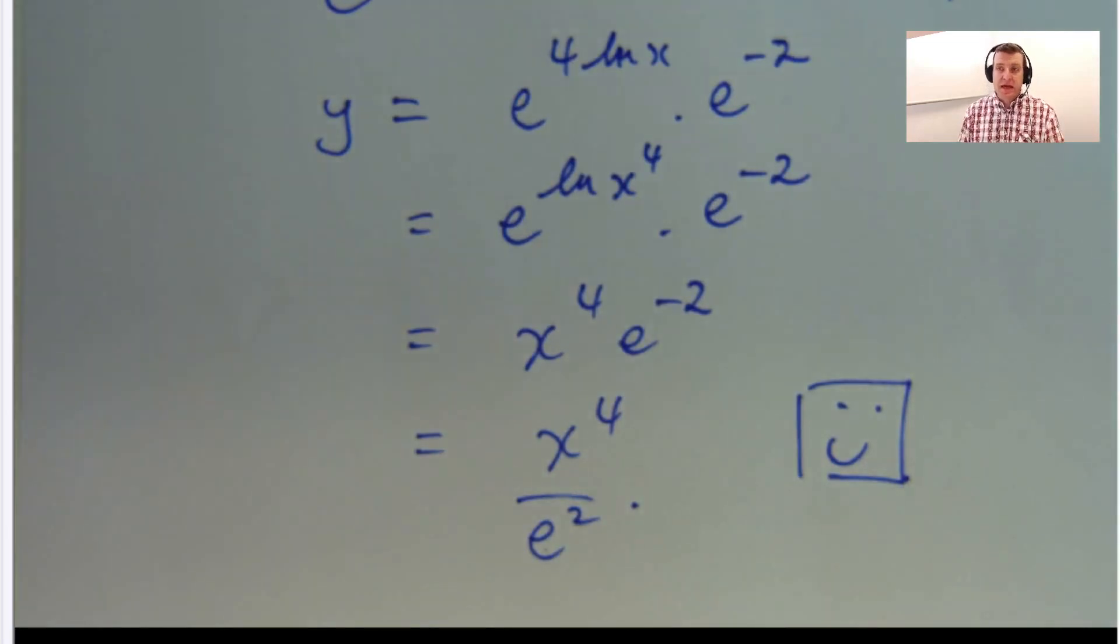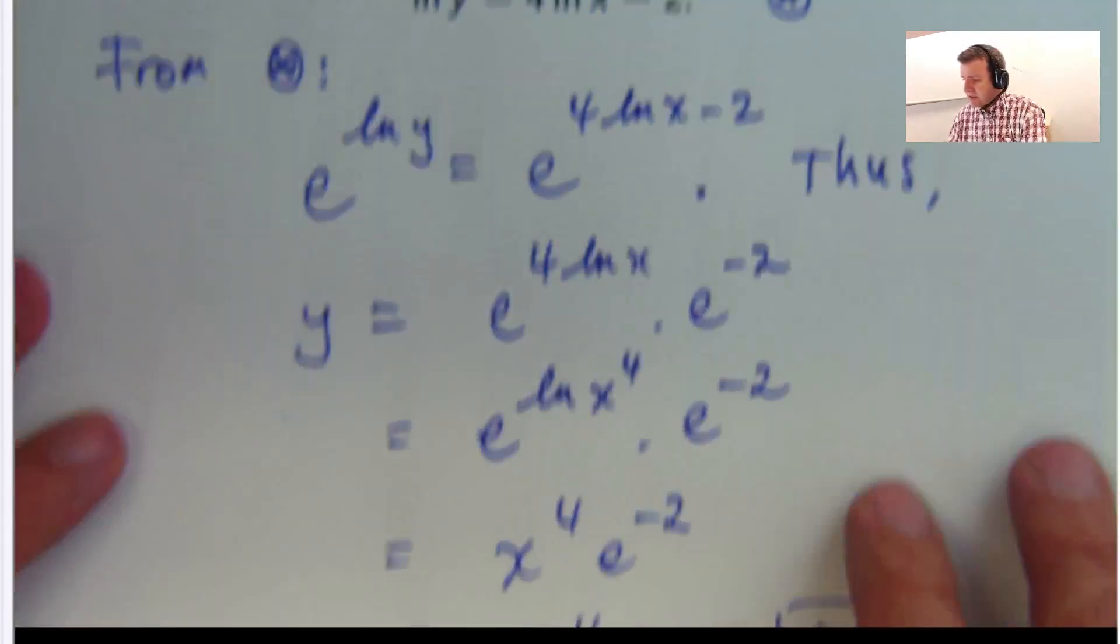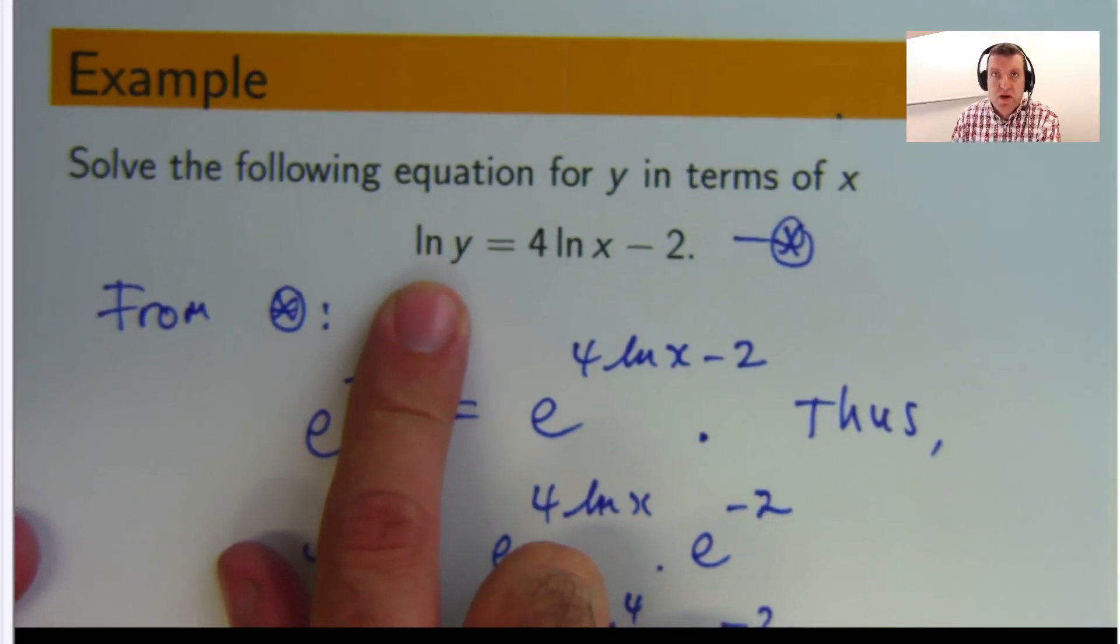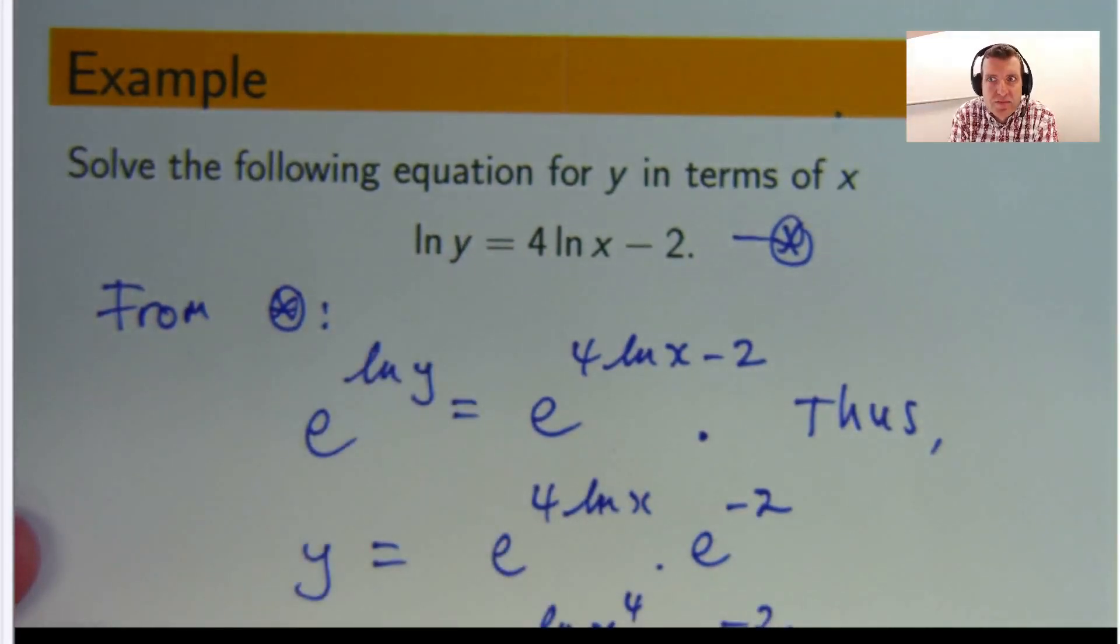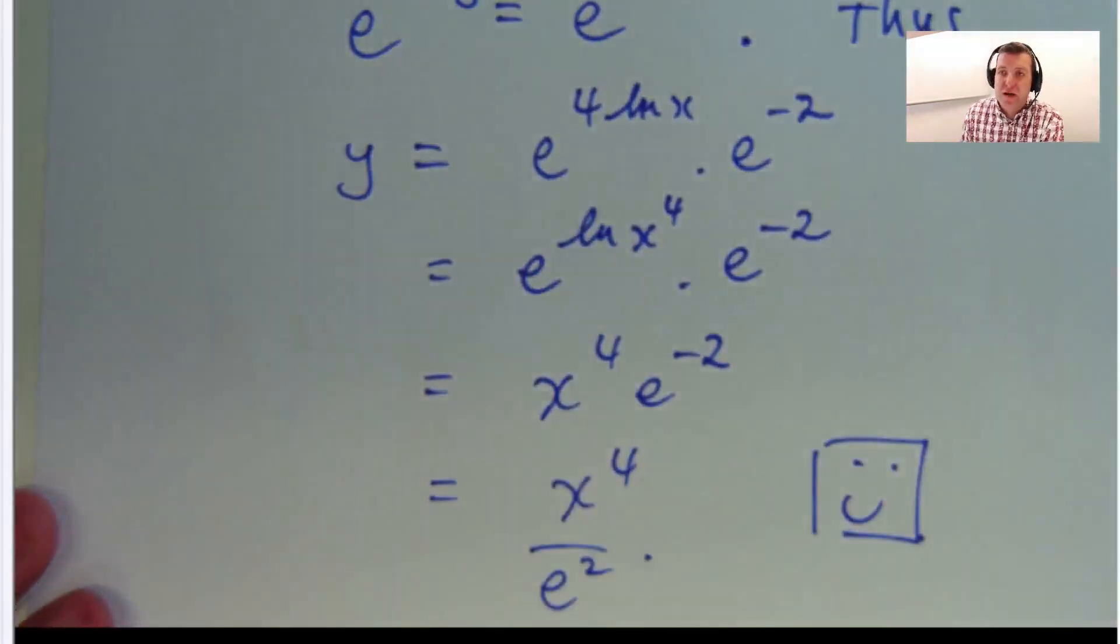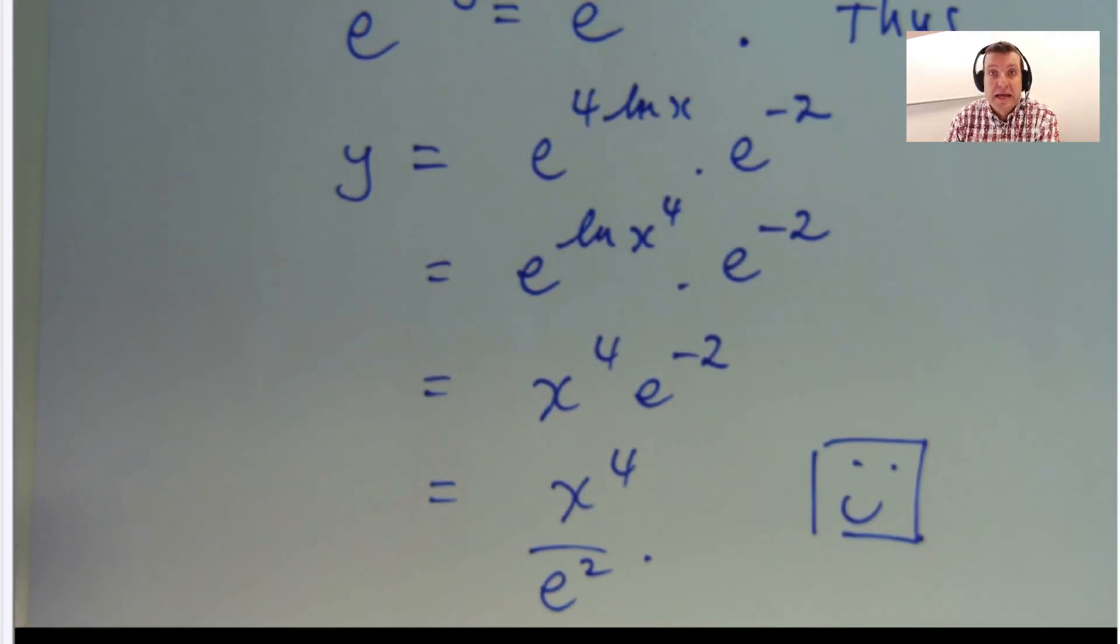So not a super easy example, but hopefully you know where to start. With the original problem, you want to get y as the subject, you've got log y, or natural log y. What undoes a logarithm? We did that operation to both sides, and then simplified the right hand side, using basic log and exponent laws.